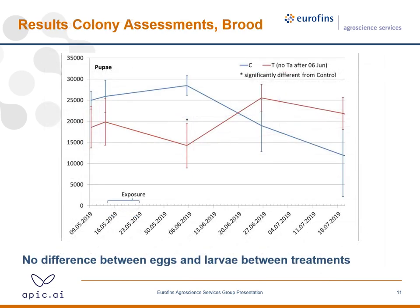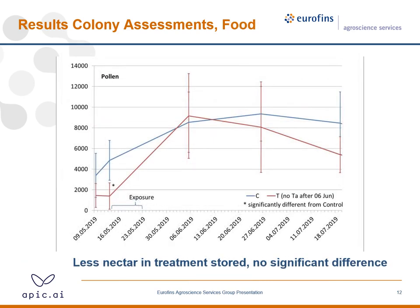For the brood results, there was no difference between eggs and larvae. In fact, the number of eggs and larvae was slightly higher in the treatment than in the control. However, for the pupae, there was a declining number after the feeding. For food stores, there was less nectar in the treatment, but not significantly so. Interestingly, after the first food cycle there was actually an increase in pollen amount — contrary to the expected effects of reduced foraging activity.